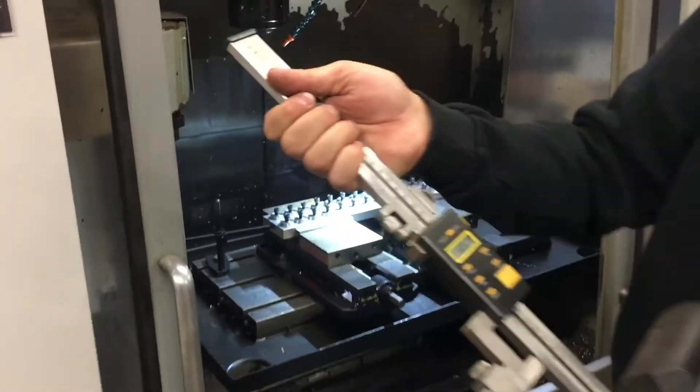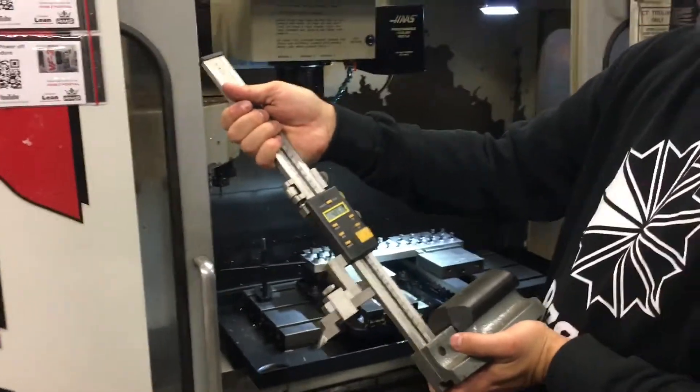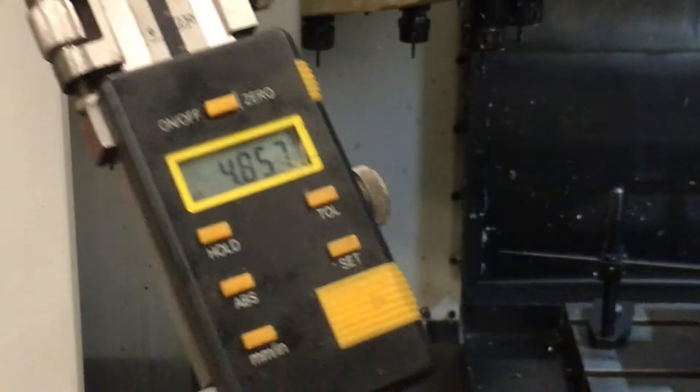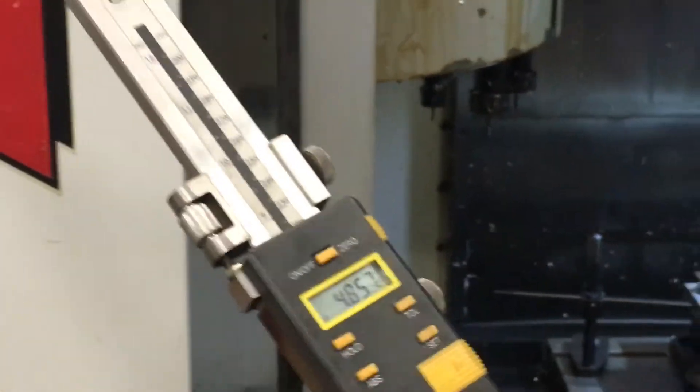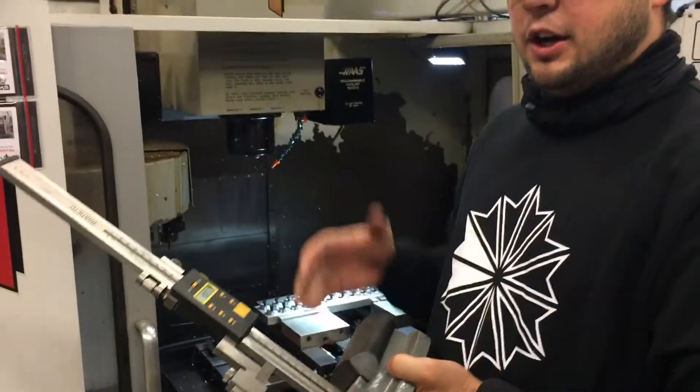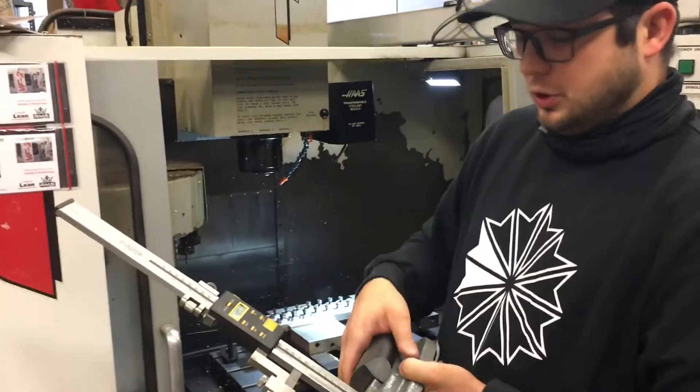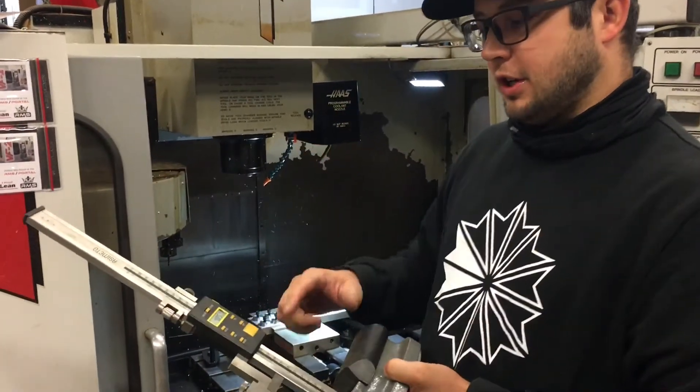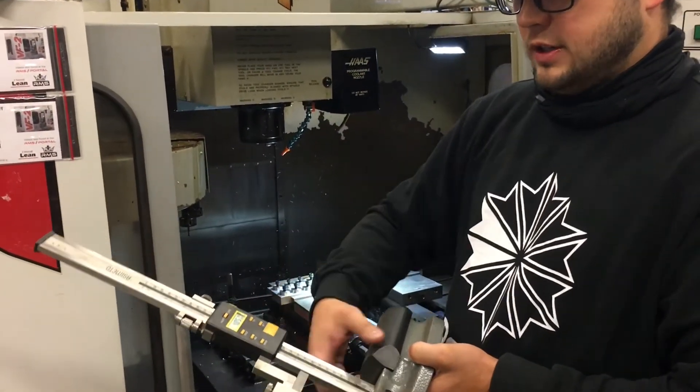So we're four point eight five seven. So what we need to do, because all our tools are set three inches off the table, we need to tell the computer the difference between where our tools are all set and where this part's set. So we're actually one point seven five, one point eight five seven.